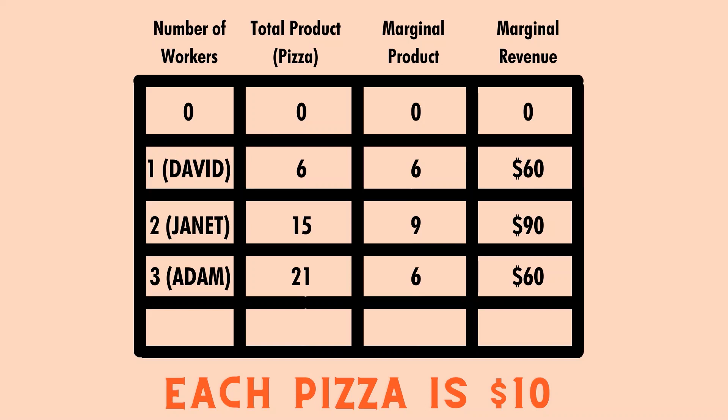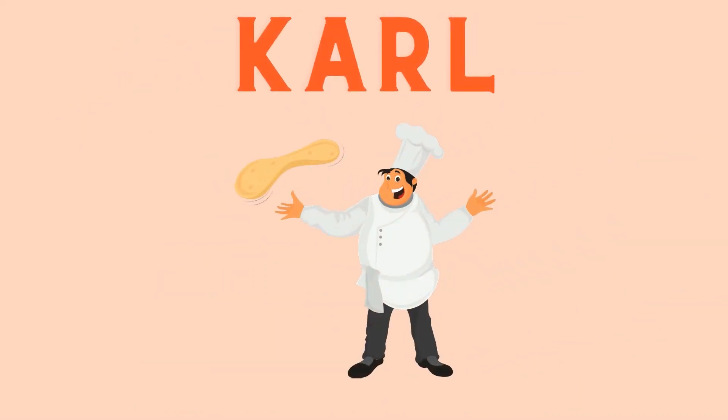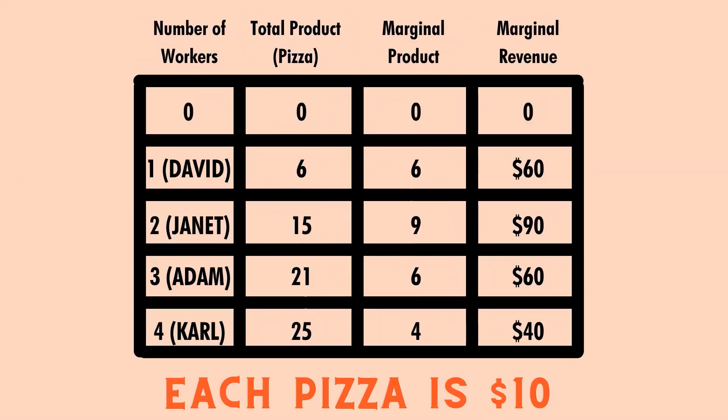With the hopes of generating even more revenue, Keynes decides to hire Carl. However, compared to the previous workers, the addition of Carl does not bring much revenue to the pizzeria. With Carl's addition, the total product increases to twenty-five from twenty-one. That four-pizza difference is attributed to Carl, and four times ten dollars gives a marginal revenue of forty dollars — the lowest among all workers previously hired by Keynes.